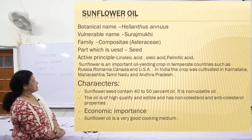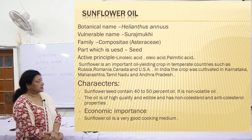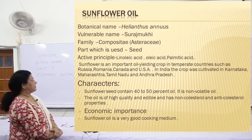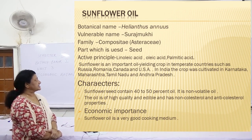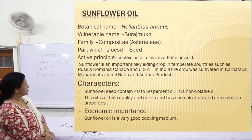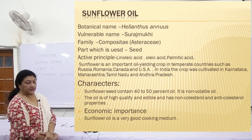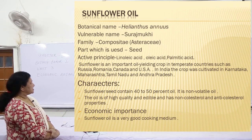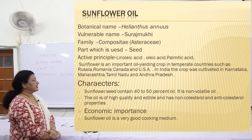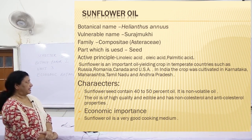Coming to sunflower oil. Botanical name: Helianthus annuus. Vernacular name: Suraj Mukhi. Family: Compositae or Asteraceae. The part used is the seed. Active principle: linoleic acid, oleic acid and palmitic acid. Sunflower is an important oil-yielding crop in temperate countries such as Russia, Romania, Canada and USA.